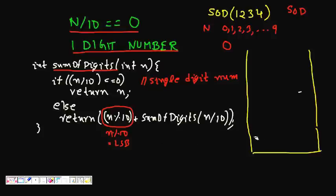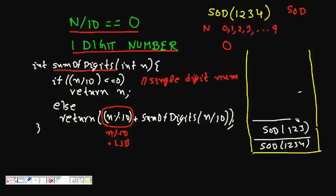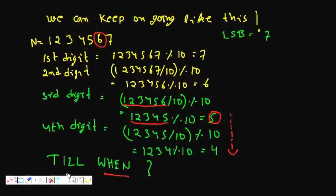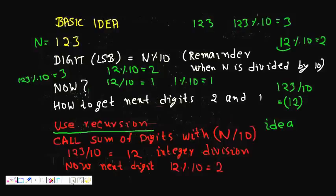So in recursion, whenever you make a function call, push it onto the stack. You keep pushing until you hit the base case, then you evaluate and pop all the functions from the stack. This was about finding the sum of digits of a given number using recursion. I hope you understand what recursion is and how to use it. If you like this video, please subscribe to my YouTube channel.